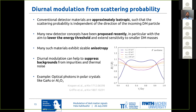Indeed, the resulting diurnal modulation may be essential for these kinds of technologies, because if you have a very low energy threshold, you can expect backgrounds from impurities and thermal noise. And these modulations may be the best way of suppressing these backgrounds. One example that has been worked out in a lot of detail is the idea of optical phonons in so-called polar crystals, like sapphire or gallium arsenide.